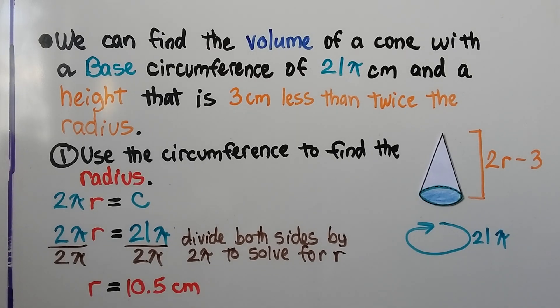We can find the volume of a cone with a base circumference of 21π cm and a height that is 3 centimeters less than twice the radius.